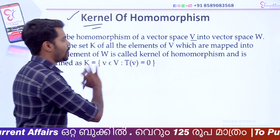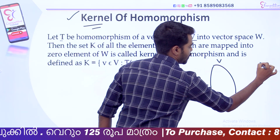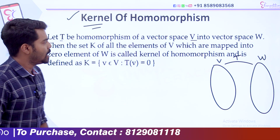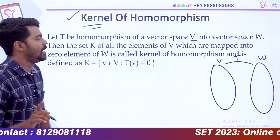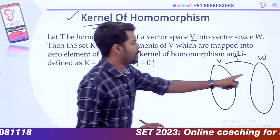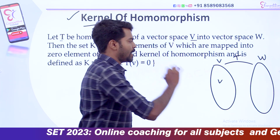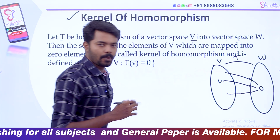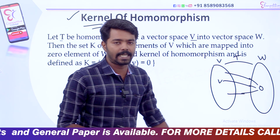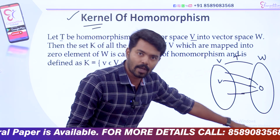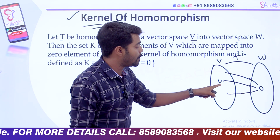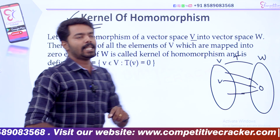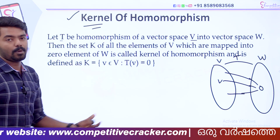This is very easy. We have vector space V mapping by function T to vector space W. What is the condition? The elements that we call — their image must be zero. The elements whose image is zero form the kernel of the homomorphism.